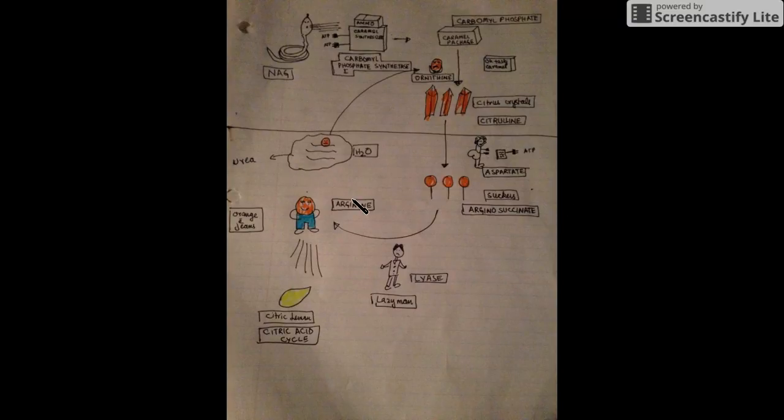So these are the basic steps in urea formation. Let me repeat it again. NAG, N-acetylglutamate, in the presence of caramel synthesizer, carbamyl phosphate synthetase one, converts carbon dioxide blowing, ammonium, and two ATPs into carbamyl phosphate, caramel package. Then this carbamyl phosphate is converted into citrulline by the addition of ornithine, thin orange, and the enzyme here is OTC, ornithine transcarbamoylase.